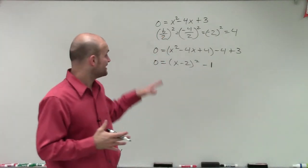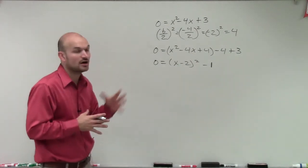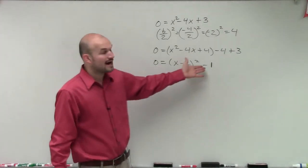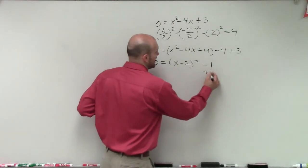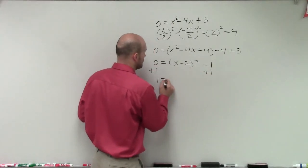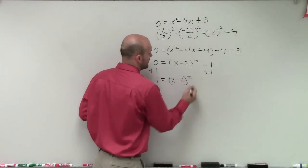Now I can apply my square root. I can solve using the square root method, which means isolating the variable using inverse operations. I'll add 1 to both sides, so I have 1 equals x minus 2 squared.